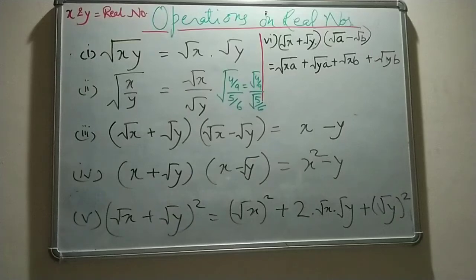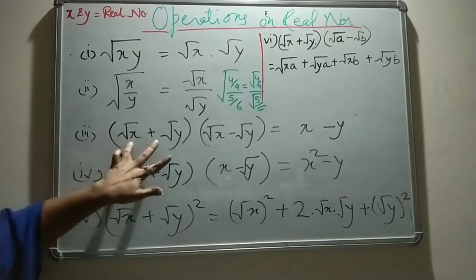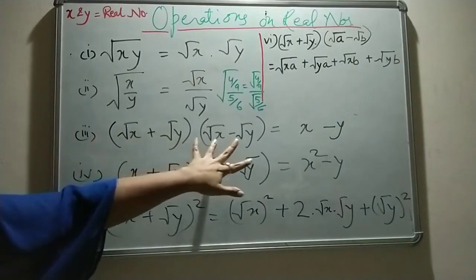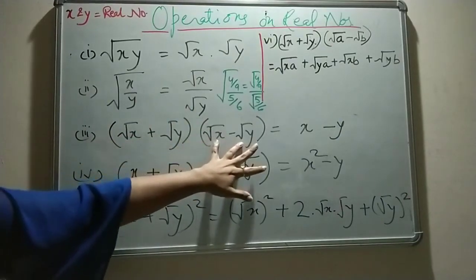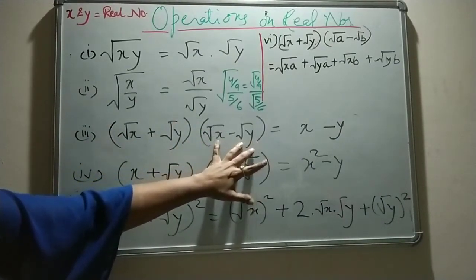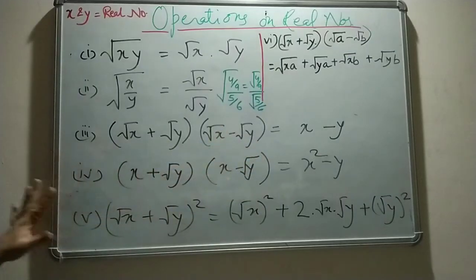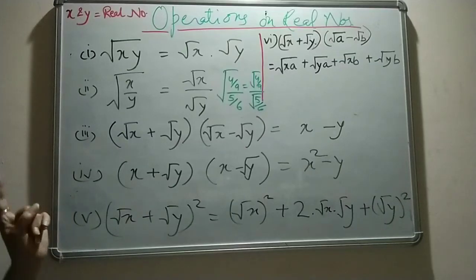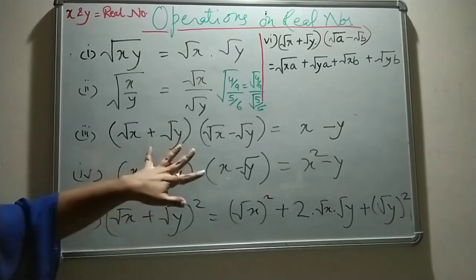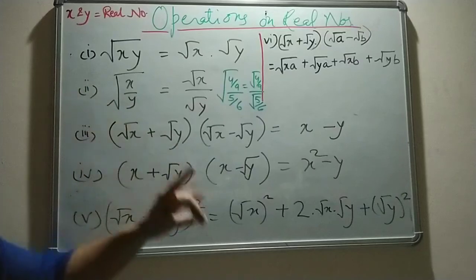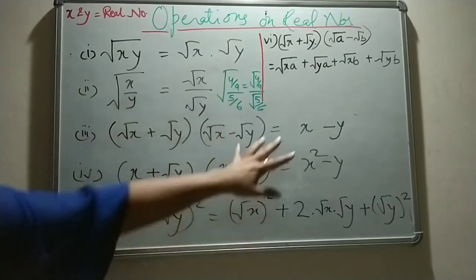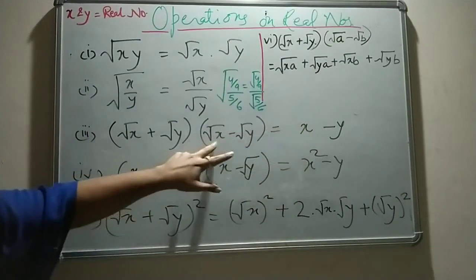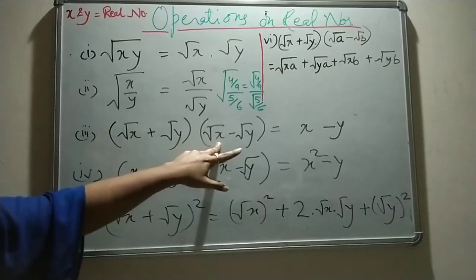Continuing the operations: the fourth operation involves (√x + √y)² = x + 2√(xy) + y, using the formula (a+b)² = a² + 2ab + b². The fifth operation gives (x + √y)² = x² + 2x√y + y. The sixth operation is the distributive form: (√x + √y)(√x − √b) follows the same algebraic identities we have been applying throughout.